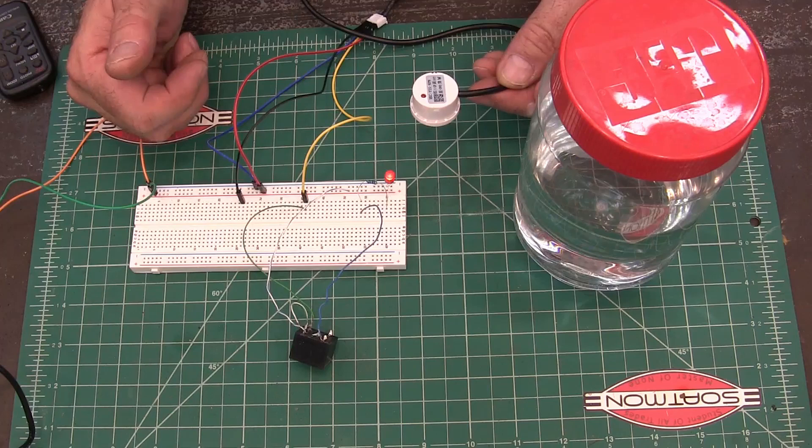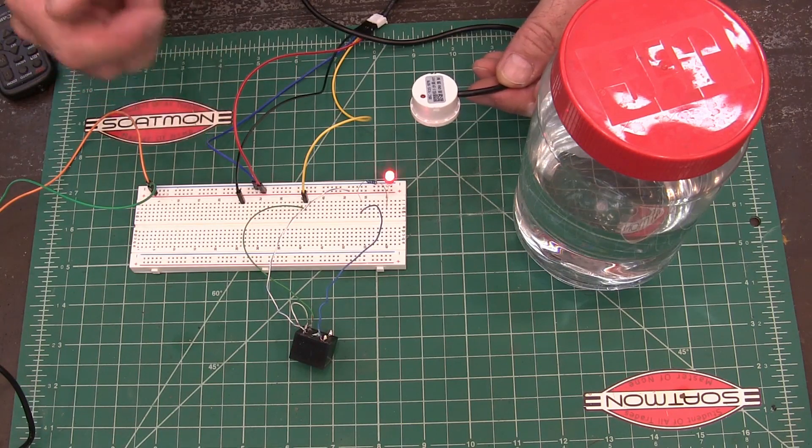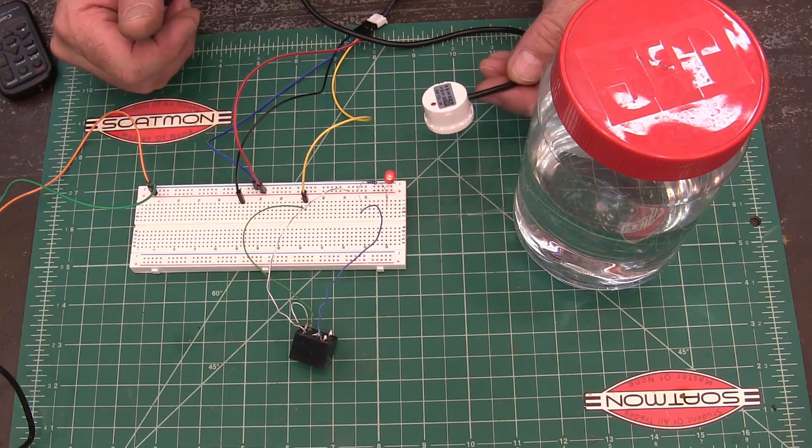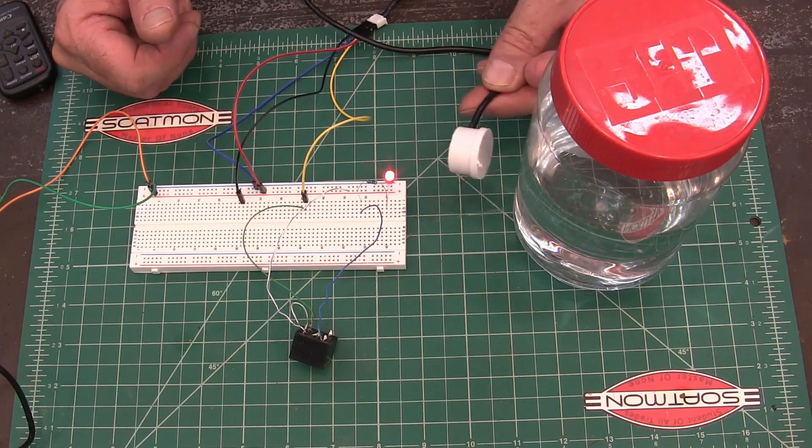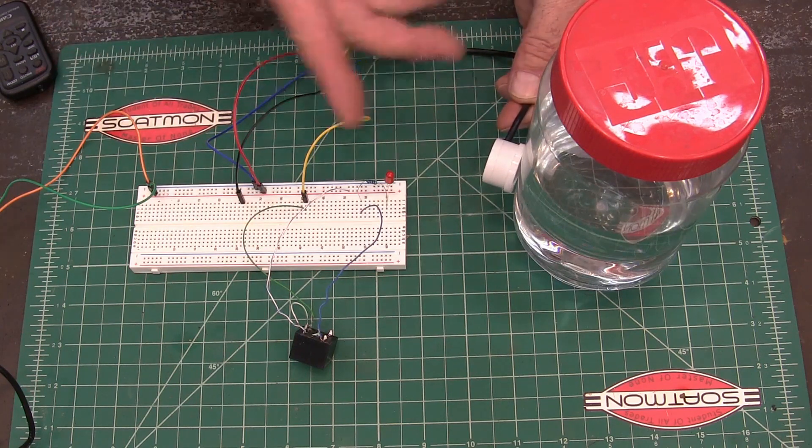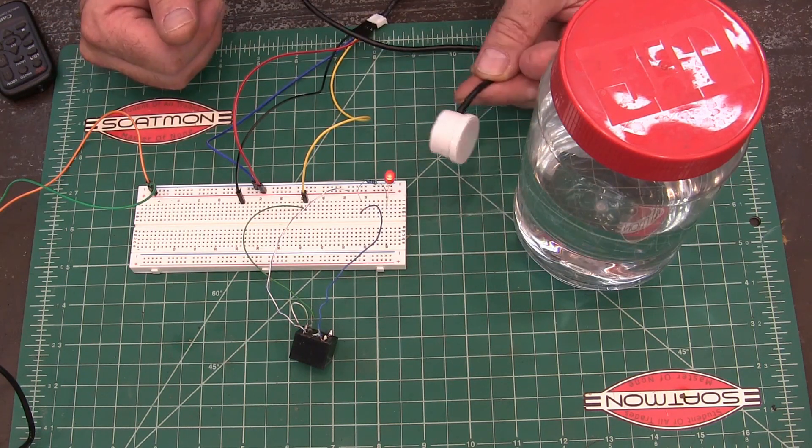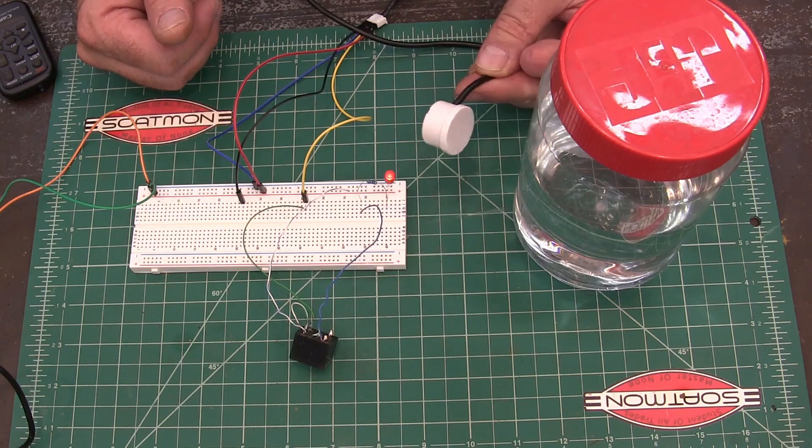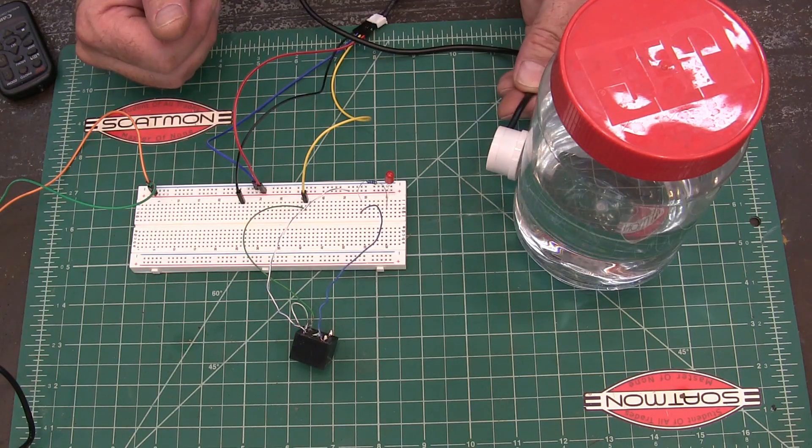I'll post a schematic in the description of the video, a link to it so that you can go get it if you want to see it. You can see when it detects liquid in a cylinder, it shuts that LED off and everything's good. And then when it loses that connection, it starts blinking again. So in that respect, it works really well.